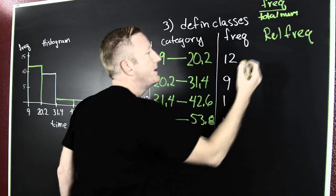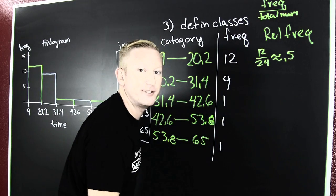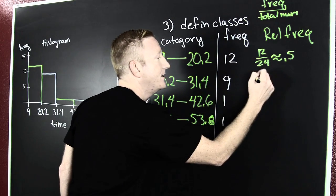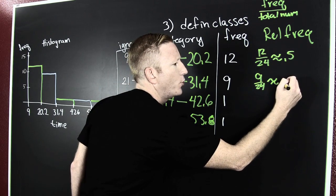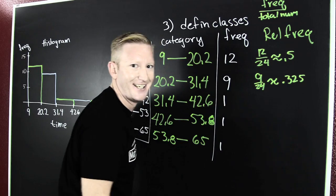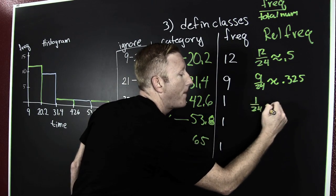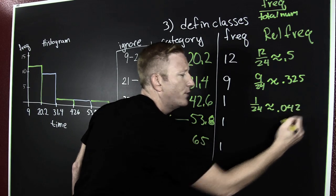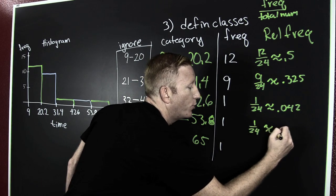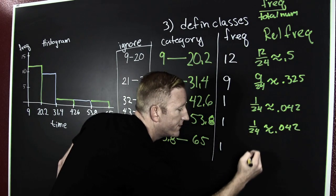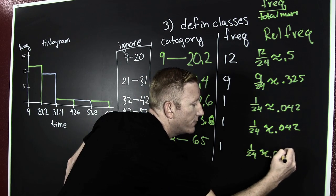And then that's what's happening here. This is 12 divided by 24. That's about .5 or 50% of the people. 9 divided by 24. That's about .325. Did it in my head. Nah, it's written on my wall. And then 1 over 24. That's about .042. Or a little more than 4%. 1 over 24 again is .042. And then 1 over 24 again is .042.